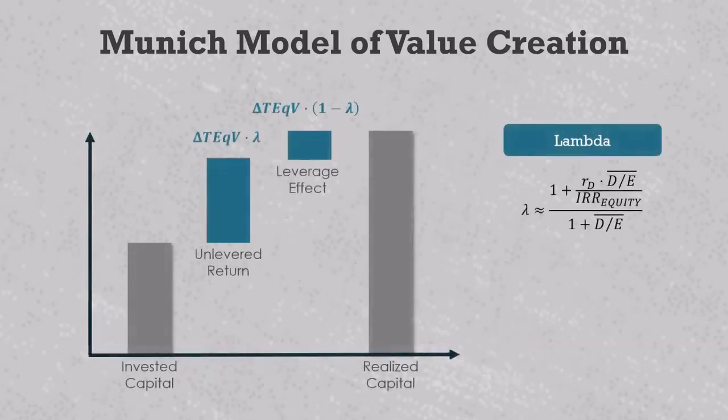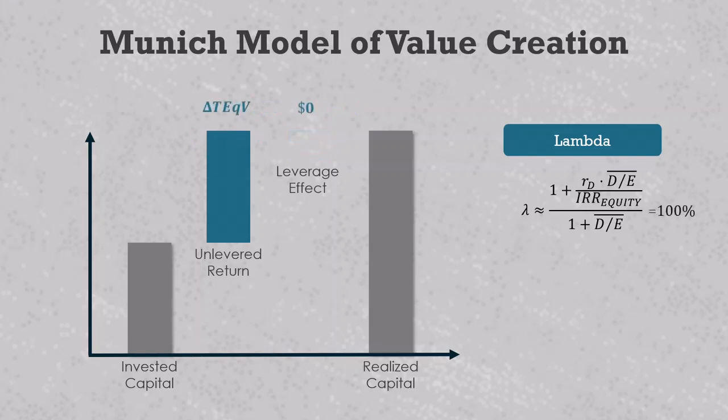Let's see how this Lambda term would work in practice. Consider a company with zero net debt. This would make the debt to equity ratio in the formula go to zero and Lambda go to one, or 100%. When this happens, there is no leverage effect and the unlevered return becomes identical to the total equity return. This is exactly what we'd expect to happen for an unlevered deal.